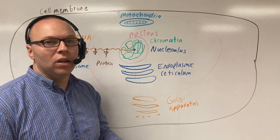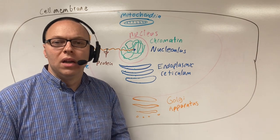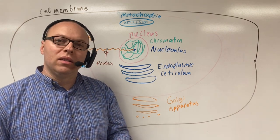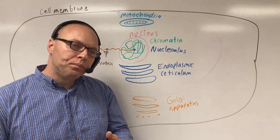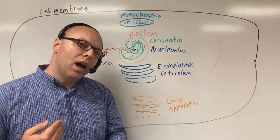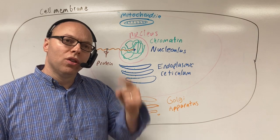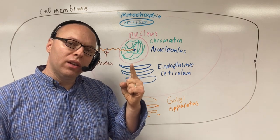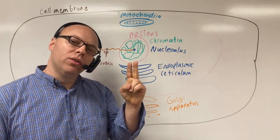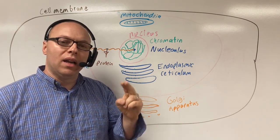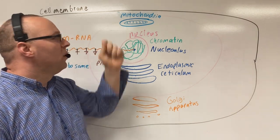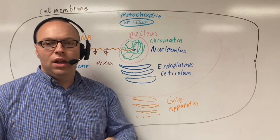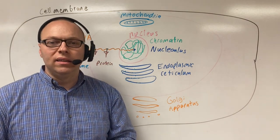Cancer cells will use a lot more sugar. And that's one of the noted things: the higher your blood sugar, the more likely you are to get cancer, and when you do get cancer, it's a lot more aggressive. Why? You're giving the cancer the energy that it needs.